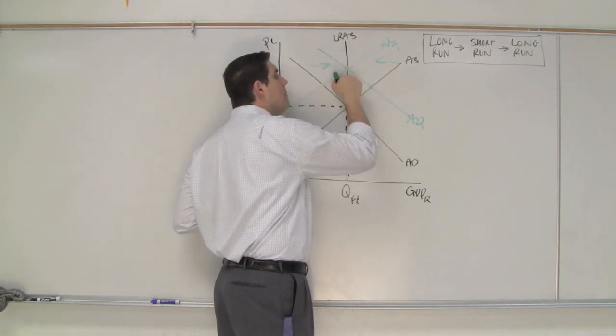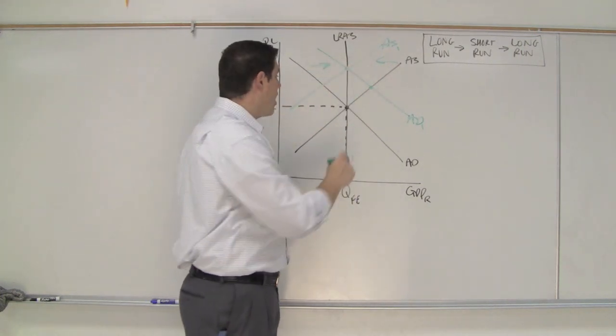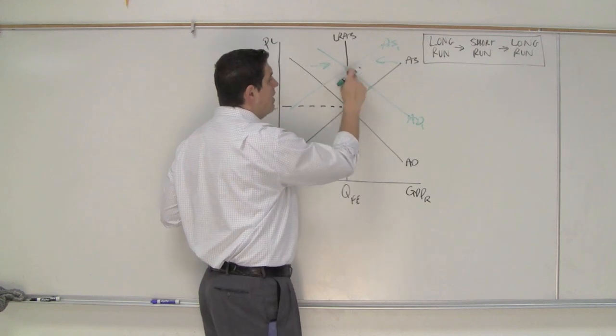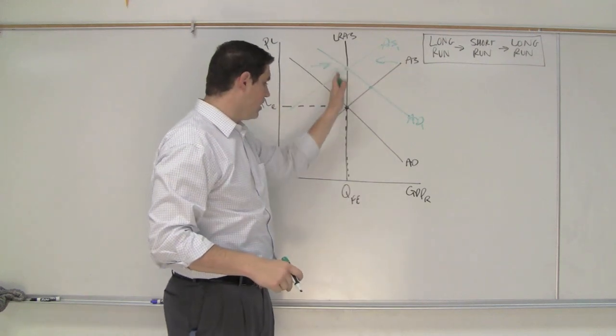What does that do? It puts us right here. Boom! Right back in the long run. So we start here. Long run. Short run. Back to the long run again. And that puts us on the long run aggregate supply.